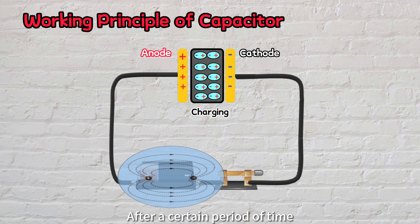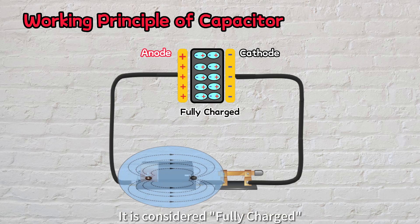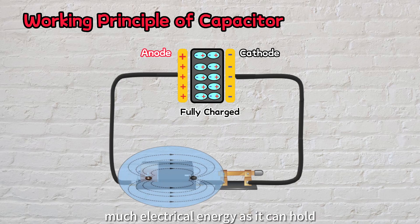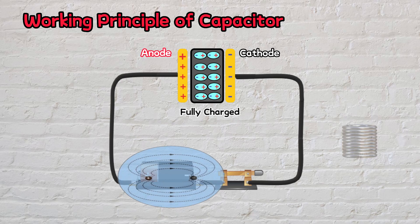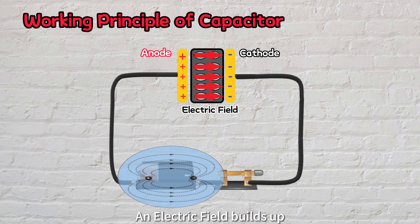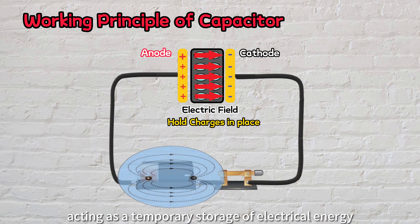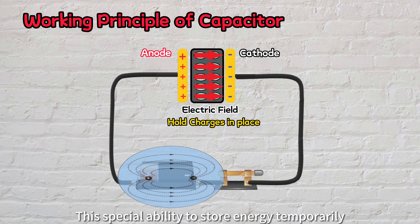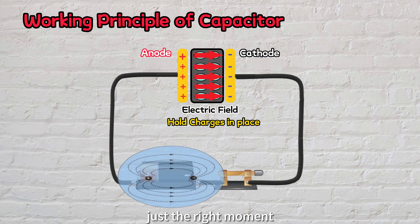After a certain period of time, once the capacitor reaches a specific point where the number of charges on its plates doesn't increase anymore, it is considered fully charged. At this stage, the capacitor has stored as much electrical energy as it can hold, acting like a spring being pressed and waiting to be released. An electric field builds up between the conductor plates and holds the charges in place, acting as a temporary storage of electrical energy. This special ability to store energy temporarily makes capacitors useful in a wide range of applications, ready to unleash the stored energy at just the right moment.